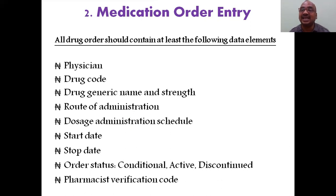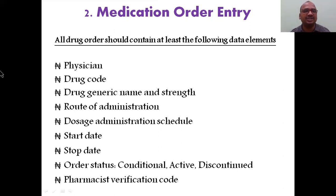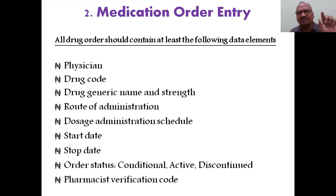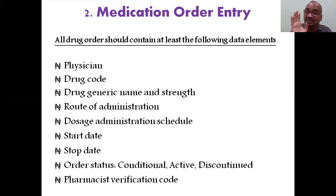The system must also be able to separate patients with active therapy from those with no therapy. When a doctor enters the medication name, the doctor's name, drug code, drug generic name, strength, route of administration, dosage, administration schedule, starting date, stop date, order status — whether active, conditional, or discontinued — and the pharmacist verification code must all be automatically recorded. These are the key elements of medication order entry.